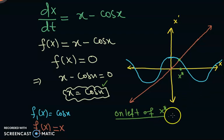So we can observe that x is less than cos x, or x minus cos x is less than 0. That means f of x is less than 0. And what does this mean? This means that the flow should be leftward. In other words, we are saying that the flow is leftward, like this.